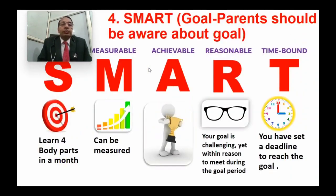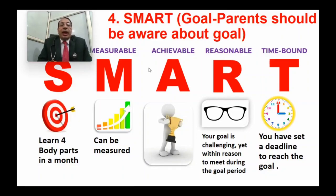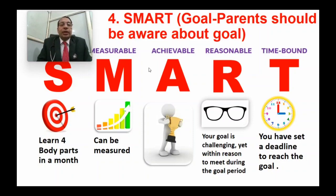Next is the goal. You must know the goal of your child's therapy because if the goal is not decided, improvement will not happen. You should ask the therapist what goal they are working on — not a vague goal. The goal should be SMART: specific, measurable, achievable, realistic, and time-bound. For example, learn 4 body parts in 4 months. It should be realistic, measurable, and have a deadline.